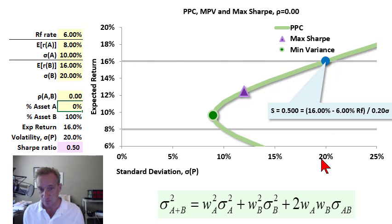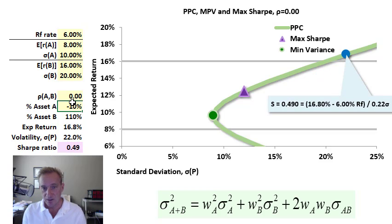It has an expected return of 16% and a volatility of 20%. Although I can keep going, I can effectively borrow, which is leverage, and borrow to invest even more in Asset B. That's why we're moving up even further into the risk-reward space.